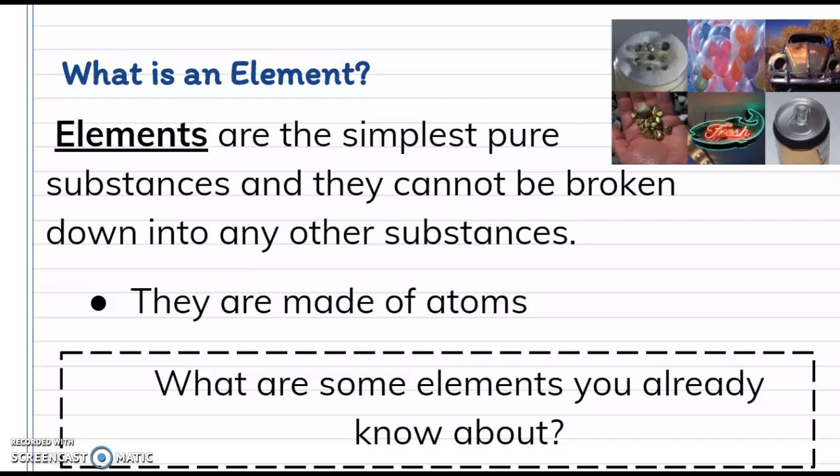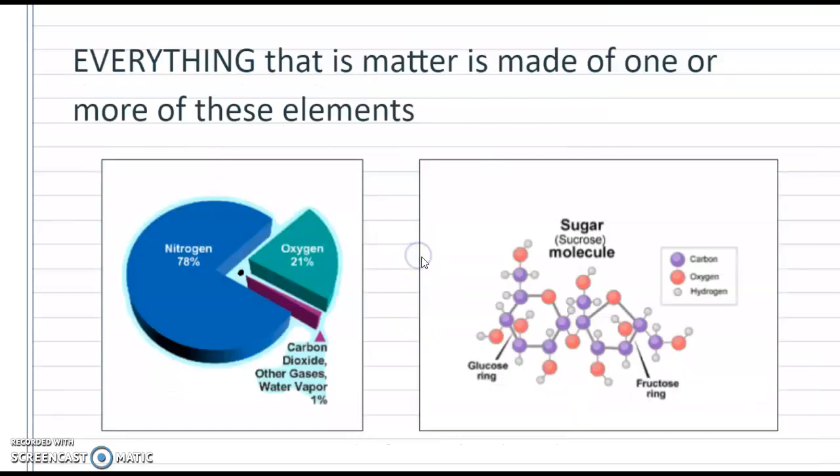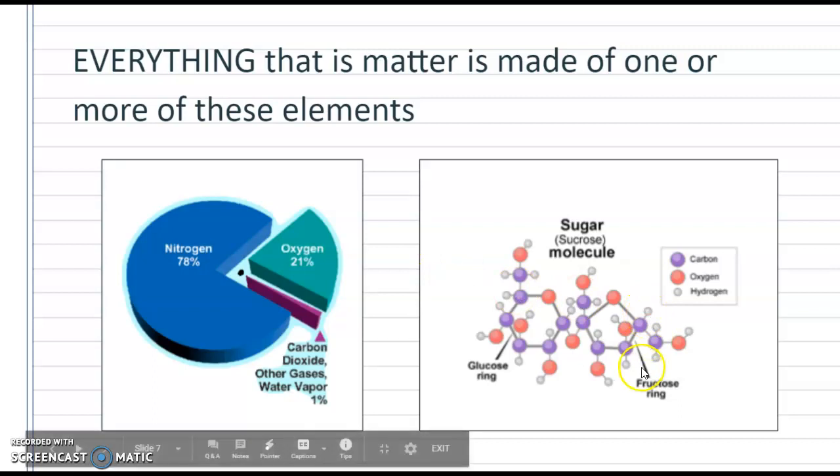So everything is made of matter. It can be made of one or more elements. So like I said, we have some elements that we know to be by themselves, like oxygen. If you can hear my kitty, she's meowing in the background, sorry guys. There's like oxygen. We can have pure oxygen that is just oxygen atoms, or we can have a kind of a compound, they're called.